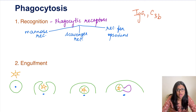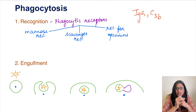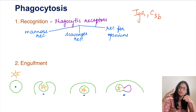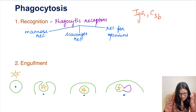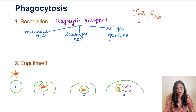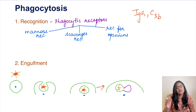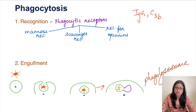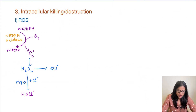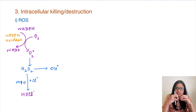The second step is engulfment. The phagocytic cell, having recognized and attached to the offending agent, will cover over it by extending pseudopods, forming a vesicle around the microbe called a phagosome. This phagosome then fuses with a lysosome present inside the cytoplasm of the phagocytic cell, forming a phagolysosome.